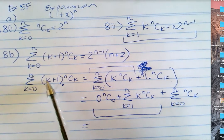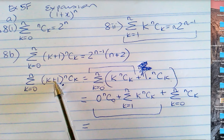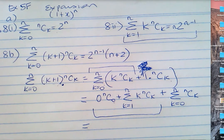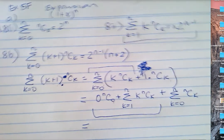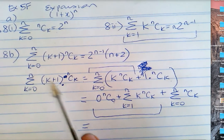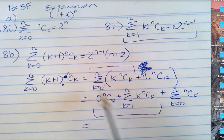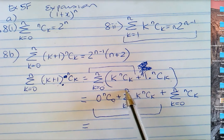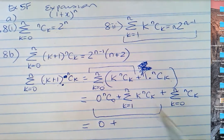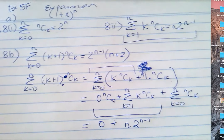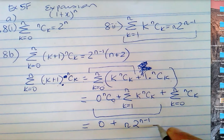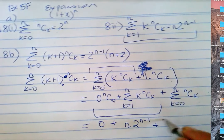I've just done k times nCk plus one times nCk, so that's an nCk — it's not k plus one to the power n. It's k plus 1 times nCk. Expand the brackets. I've noticed this is one off from that result, so I do the zero term plus from one to n. Therefore, that's zero plus the answer to the first part, which is n times 2 to the power of n minus one, plus the answer to the second part, which is 2 to the power of n.